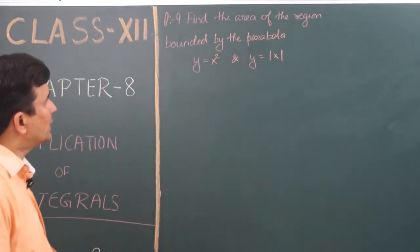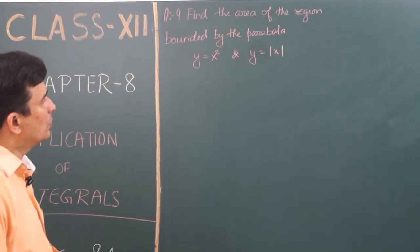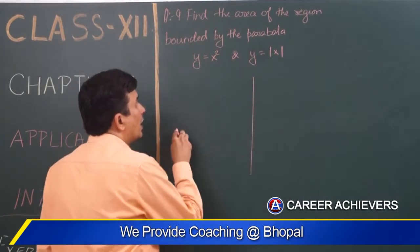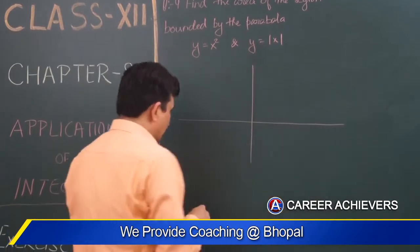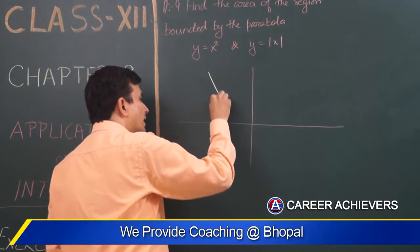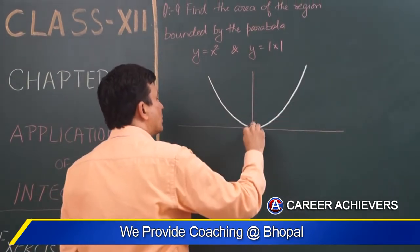Find the area of the region bounded by the parabola y equals x square and y equals mod of x. Okay, y equals x square kaisa parabola banega - upward parabola banega, y equals mod of x.